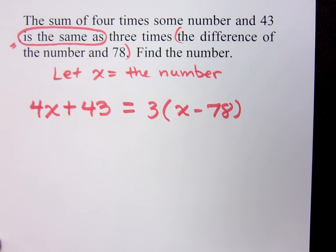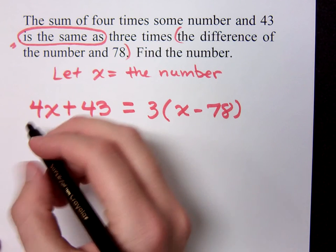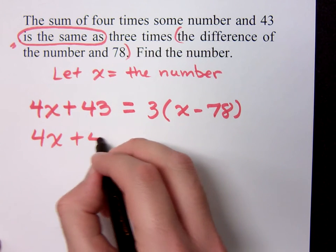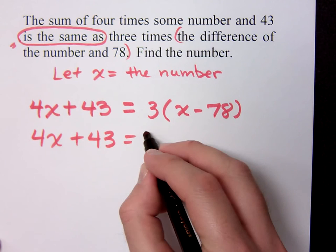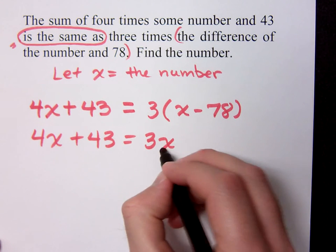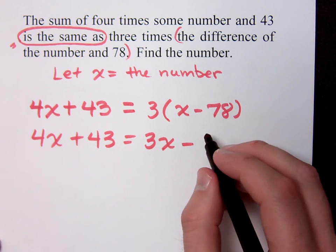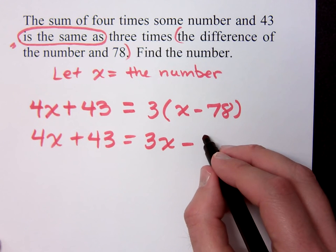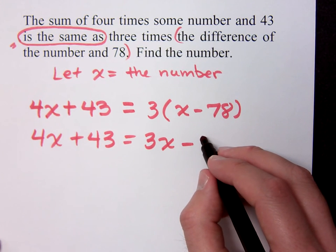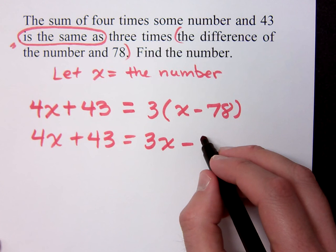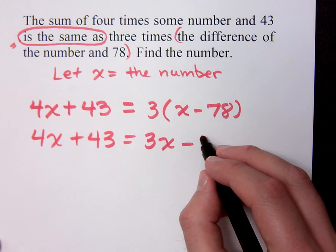Then what would you do with that? Distribute the three first. If I distribute the three, I've got 4x plus 43 equals 3x minus — three times 78. Three times 70 is 210, three times 8 is 24, so 210 and 24 is 234. So: 4x plus 43 equals 3x minus 234.